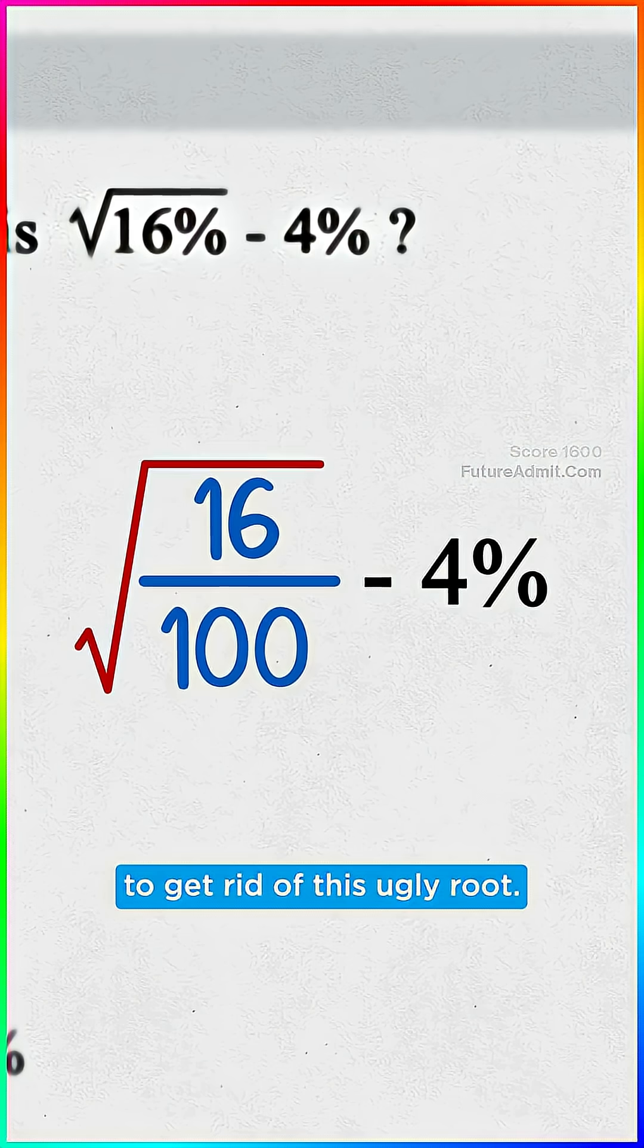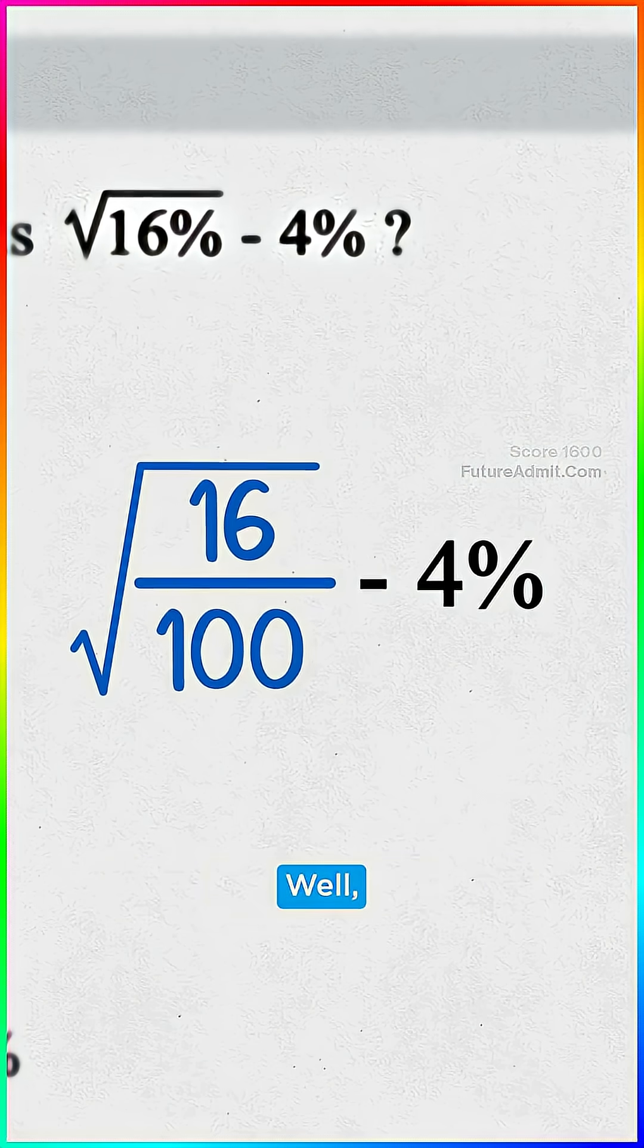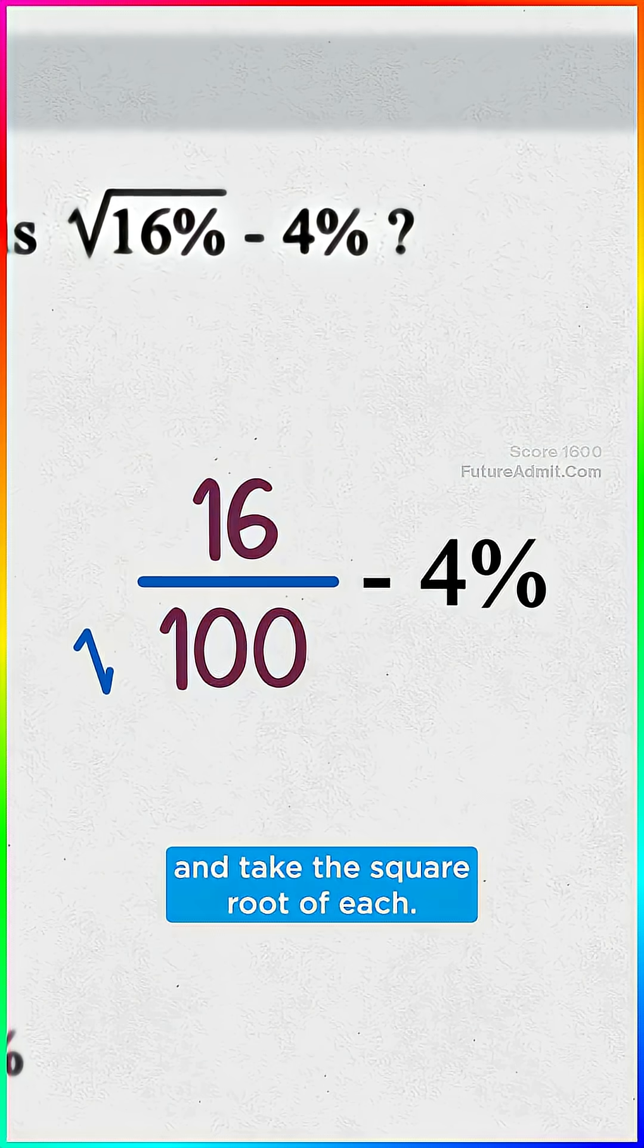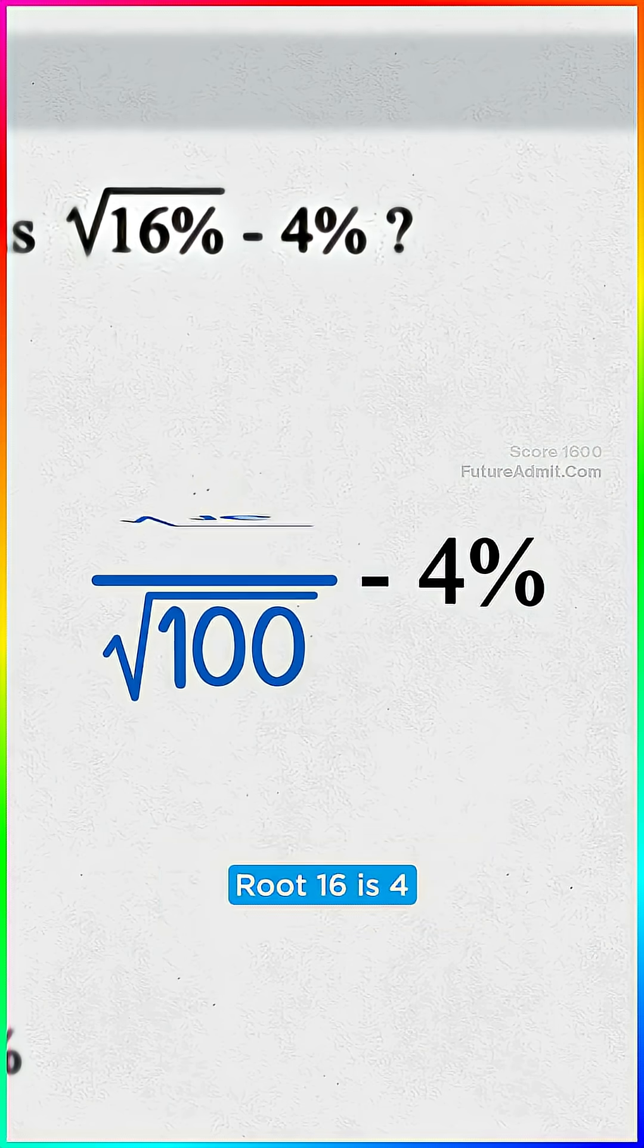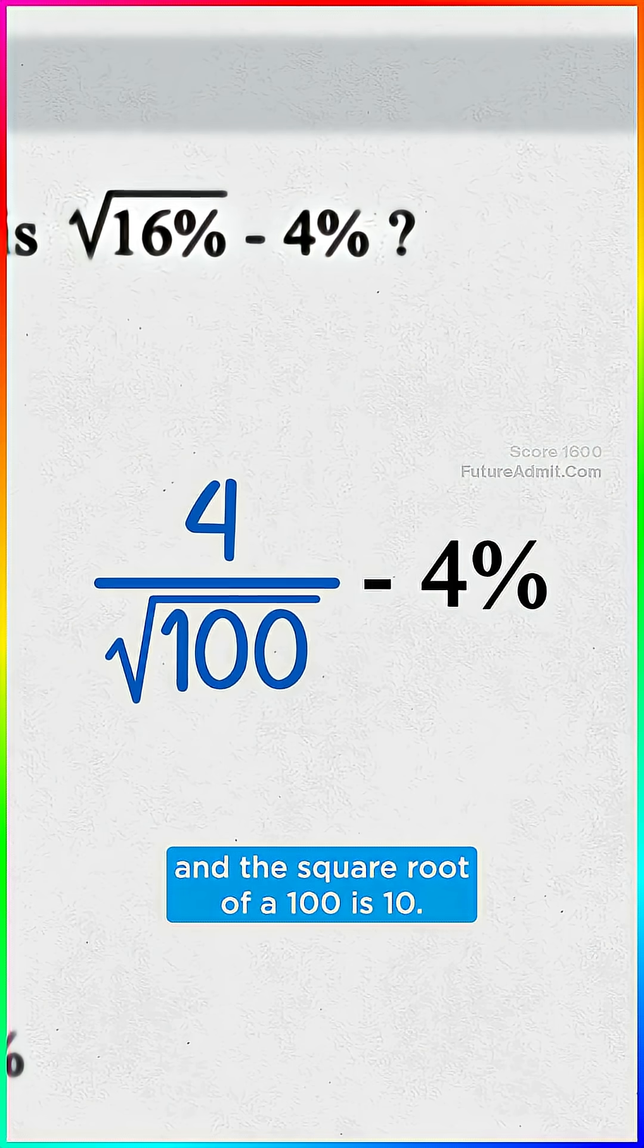But we still have to get rid of this ugly root. So how do we take the square root of a fraction? Well, we can split these two up and take the square root of each. Root 16 is four, and the square root of 100 is 10.